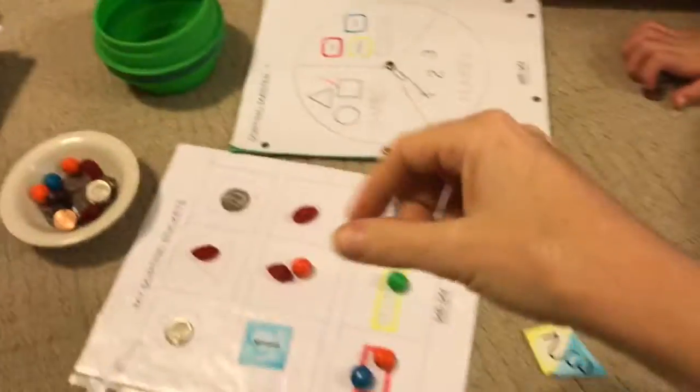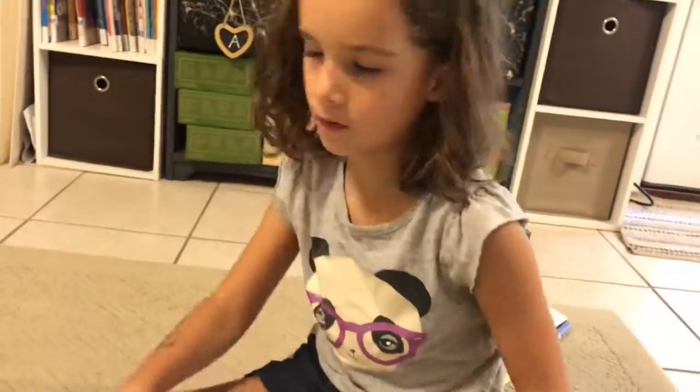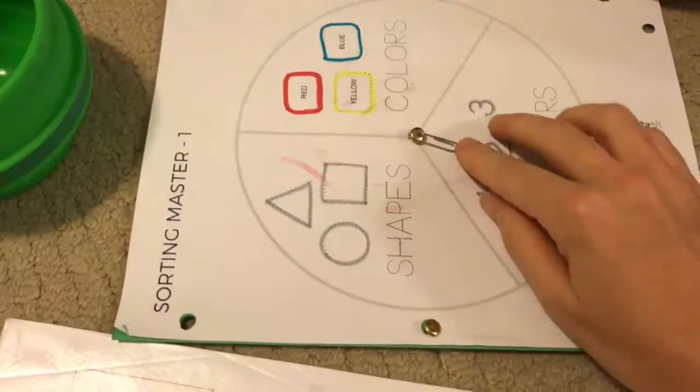So now you can play this with one person, so Ava could continue to spin until the whole game board is full, or you can take turns. So I go, then my mom goes.